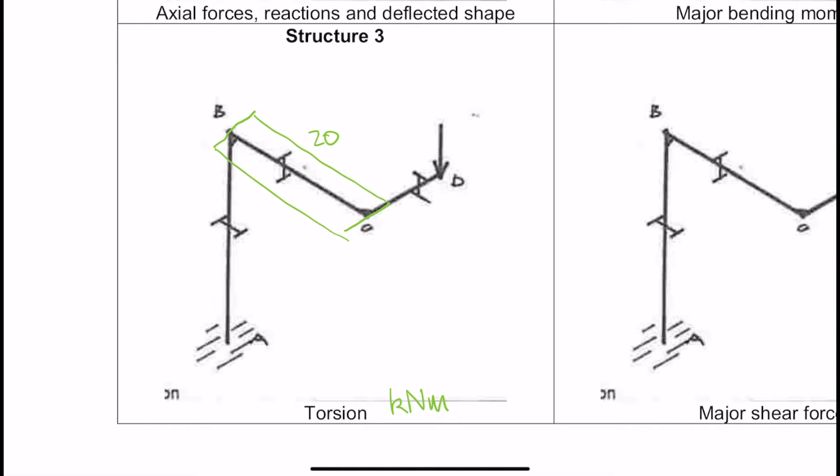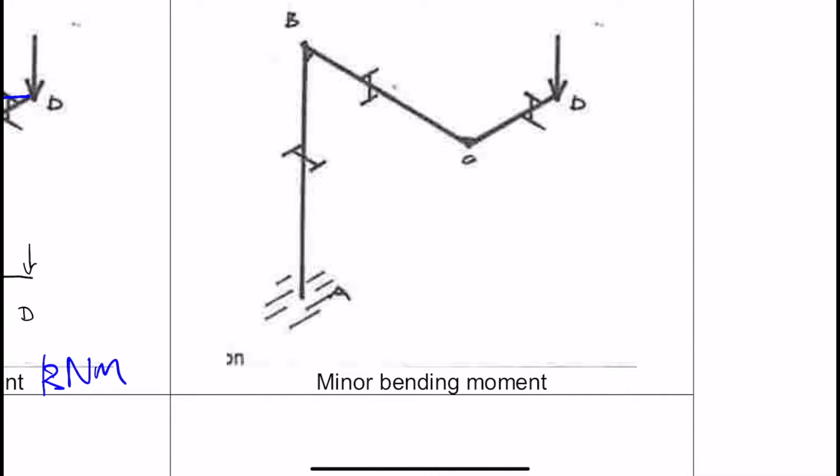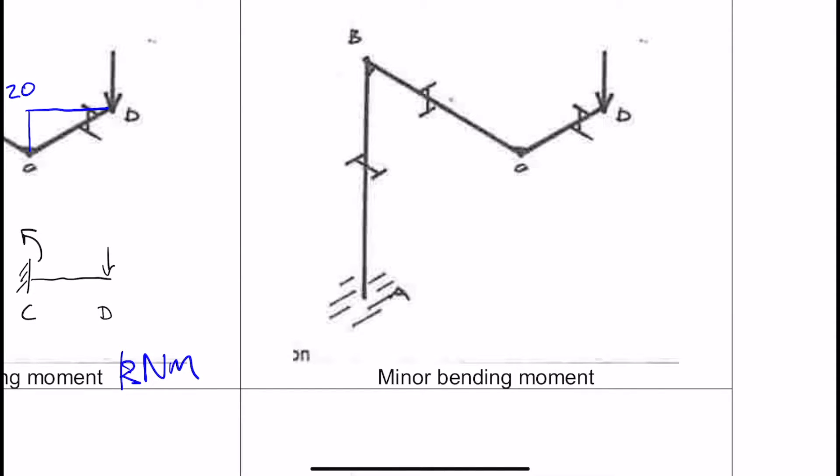Okay, so how does the torsion at B transmit into column AB? Well, notice the direction of the H section there, the I section, however you want to call it. But that torsion wants to rotate in this plane like that. And therefore that's a minor axis bending along AB. So we need to jump to the minor axis bending moment here. And it starts off at 20, because that's what the applied torsion is, so it's 20.